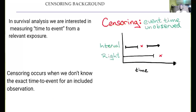In survival analysis, we are interested in measuring the time to events for a relevant exposure or observation. There is a particular topic that needs to be understood if you want to build a very good survival analysis model, which is called censoring. Censoring occurs when we don't know the exact time to events for an included observation.